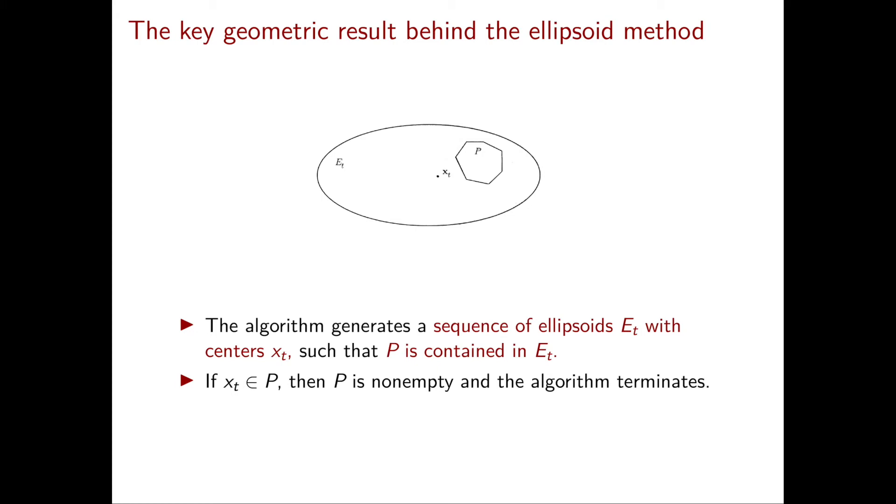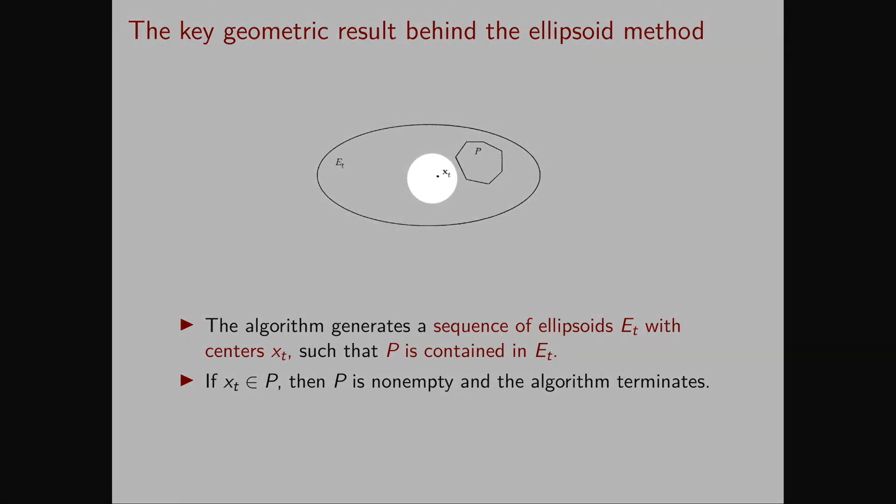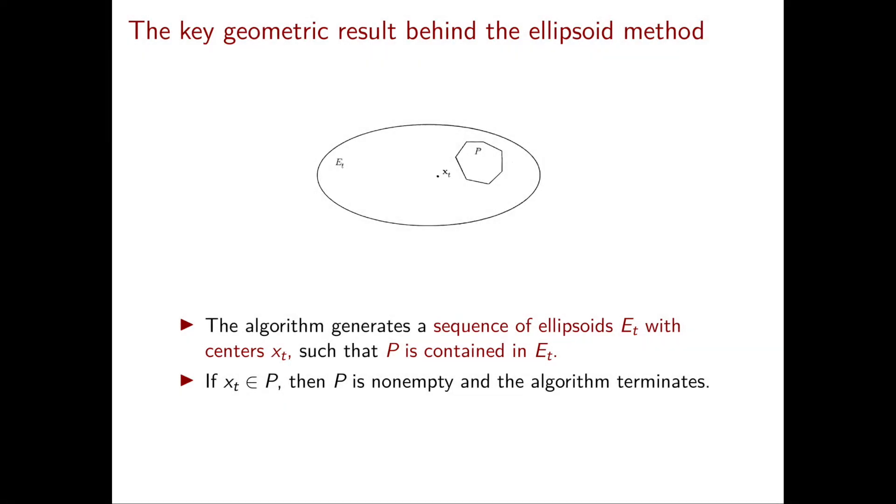Next the ellipsoid method looks at the center of this ellipsoid. We denote this vector by x_t. Then the algorithm checks if x_t is in the polyhedron or not. If it is in the polyhedron then P is non-empty and the algorithm terminates.